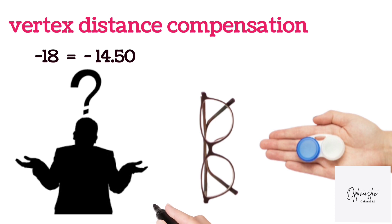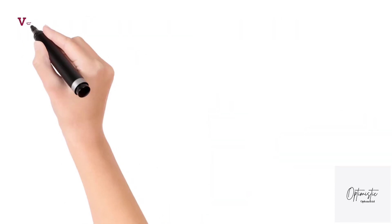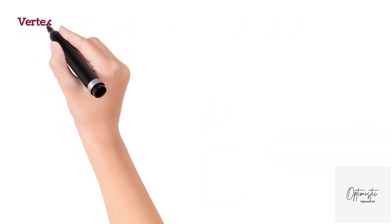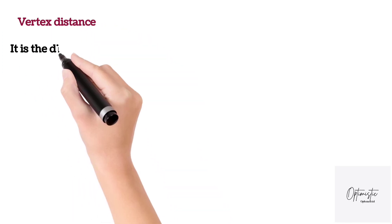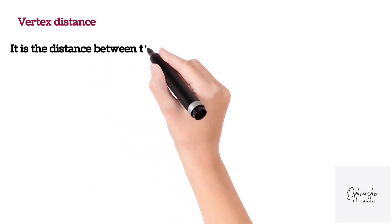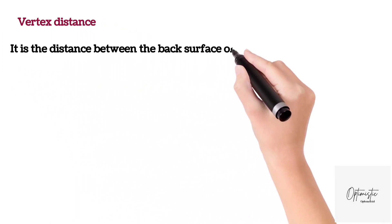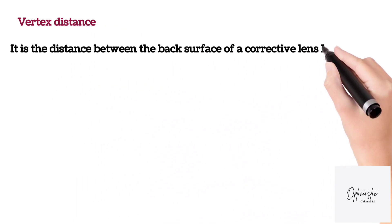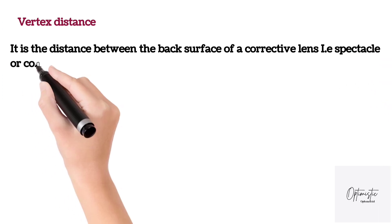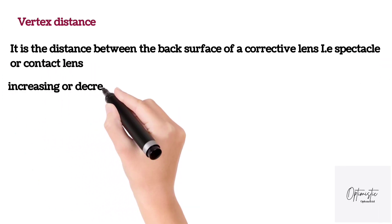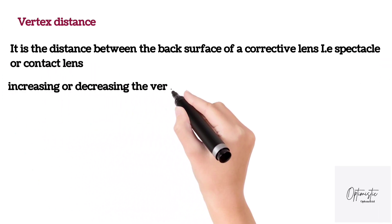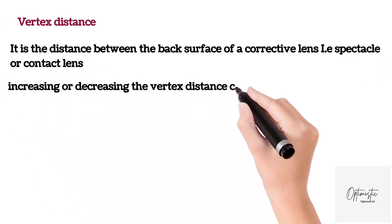Before starting, you should know what vertex distance is and what its uses are. Vertex distance is the distance between the back surface of your corrective lens — which could be a contact lens or a spectacle — and the anterior surface of the cornea.